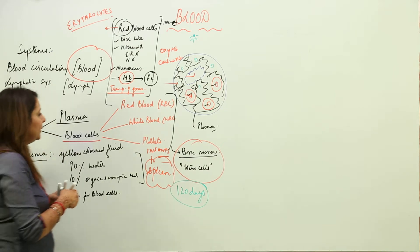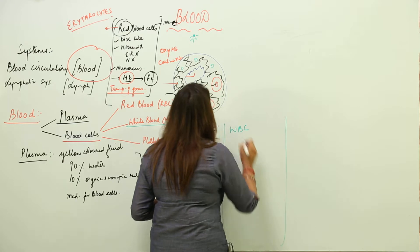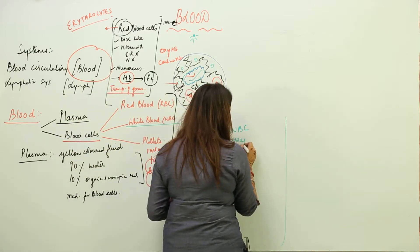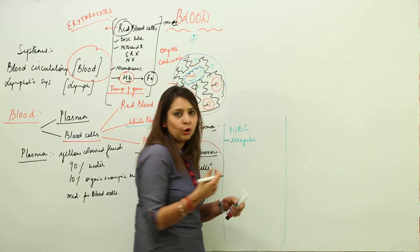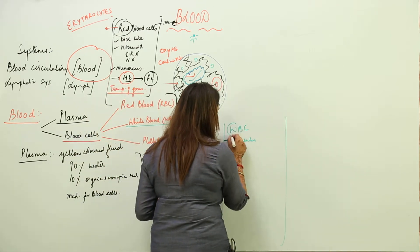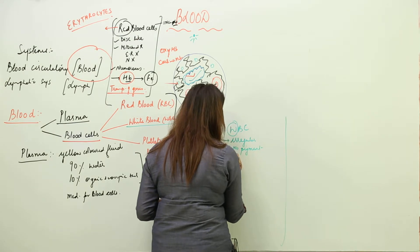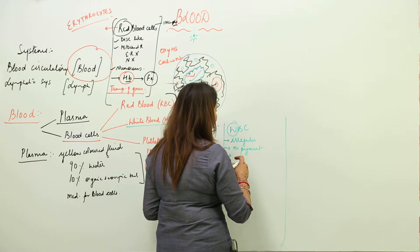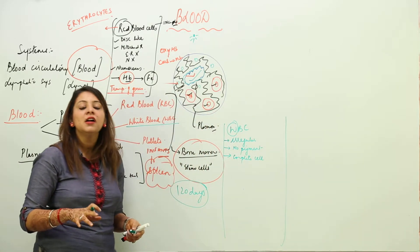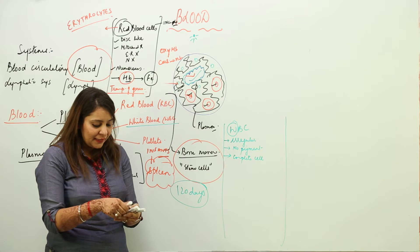Now moving on to WBCs. WBCs are of irregular shape — they can change their shape according to their needs. They appear white because they do not have any colored pigment. Unlike RBCs, WBCs are complete cells: they contain a nucleus, mitochondria, endoplasmic reticulum, and all organelles.